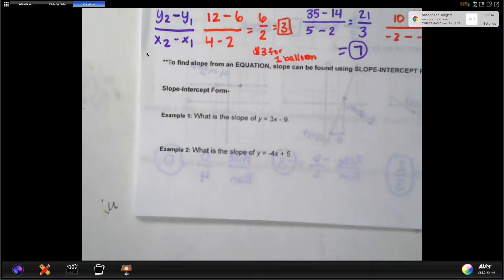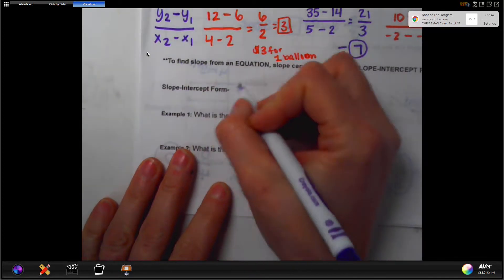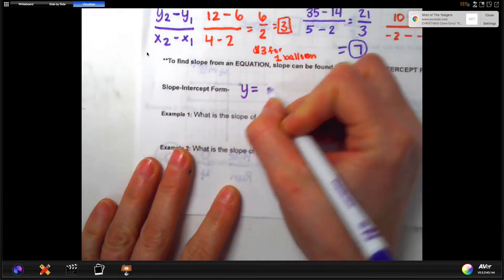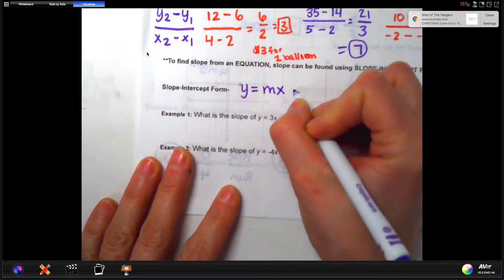Well, in order to start the lesson today, it would be helpful to know what slope-intercept form is. Slope-intercept form is a way that we write the equation, any equation, so that it's easy for us to see the slope and the y-intercept. So the format is this: y equals mx plus b.